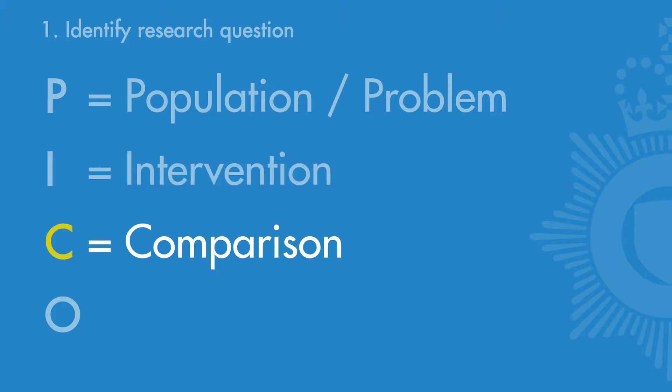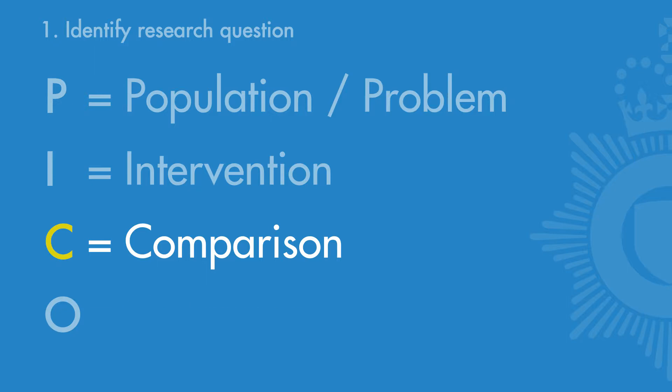C is for comparison — these would be people who did not receive the intervention. Perhaps they didn't get anything, or they got something different from those who did receive the intervention. O is for outcomes — what are the intended outcomes of the intervention? These will be measurable and help inform the main findings of the study.